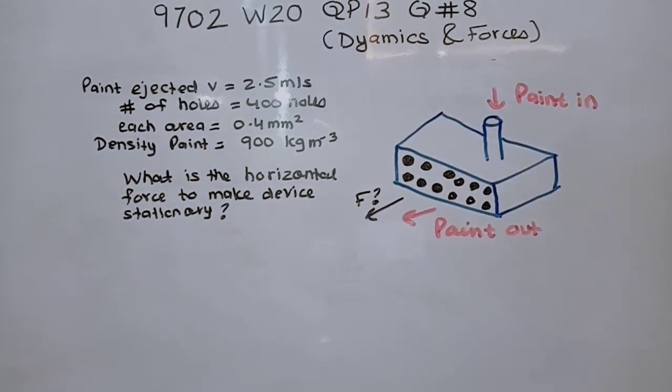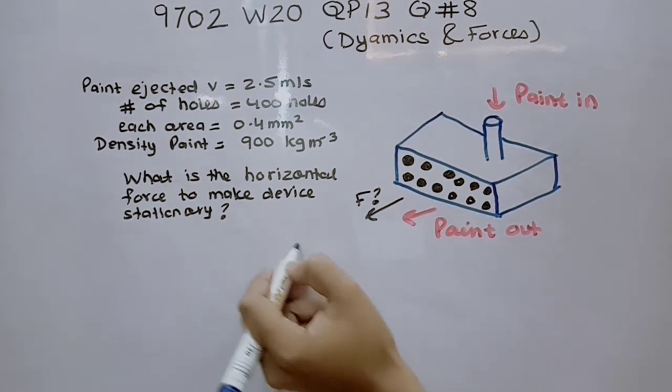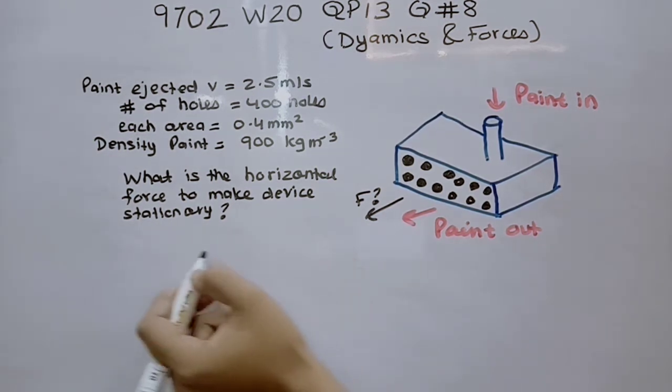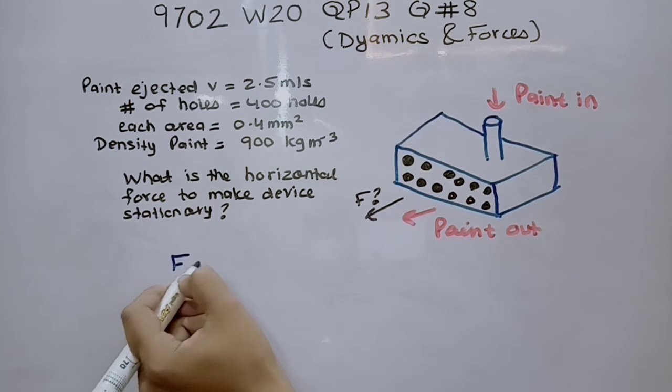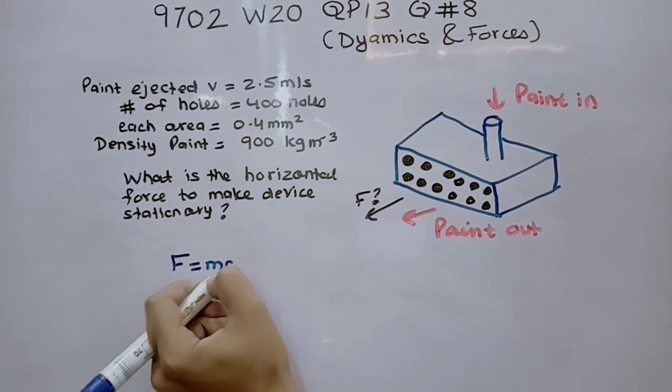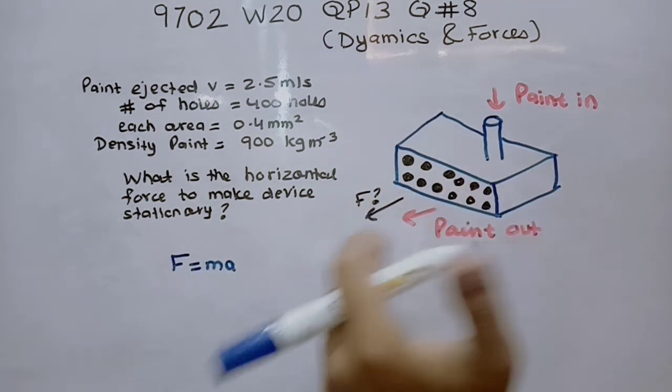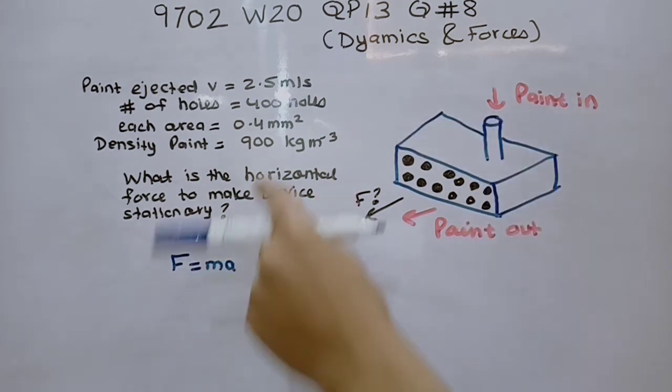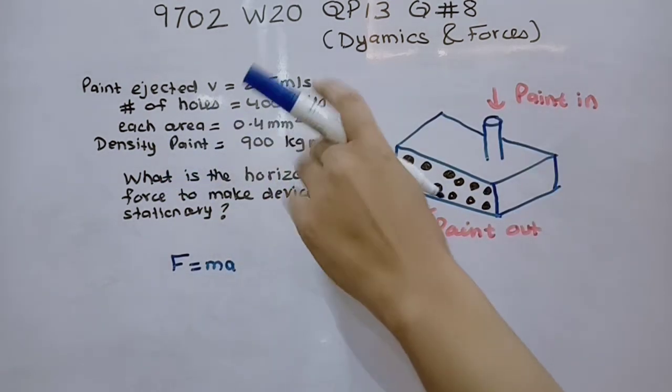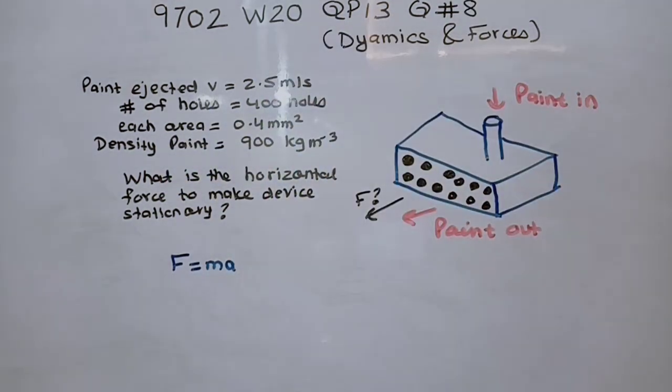Now what it says is what is the horizontal force required to make the device stationary. Now as far as AS level physics is concerned we are only given with the formula F equals MA. Now we need this formula in terms of density, area and velocity. So how do we make it?